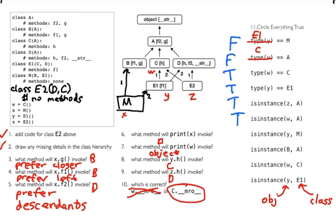Is Y an instance of M? Y is of type E1, so I start there and I can only go up — I can't go down to M. So this is false. What about isinstance(B, A)? That's a little tricky because both B and A are classes. The rule is I can only have an object and a class for isinstance. There are other functions to check if one class is a descendant of another, but I won't cover those here. So isinstance(B, A) would actually crash — it's not going to return true or false, it's going to fail.